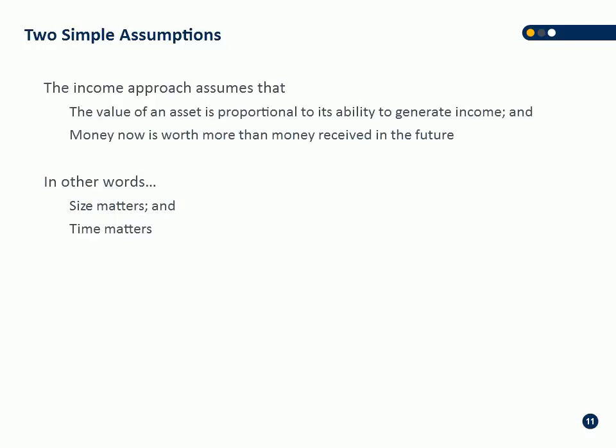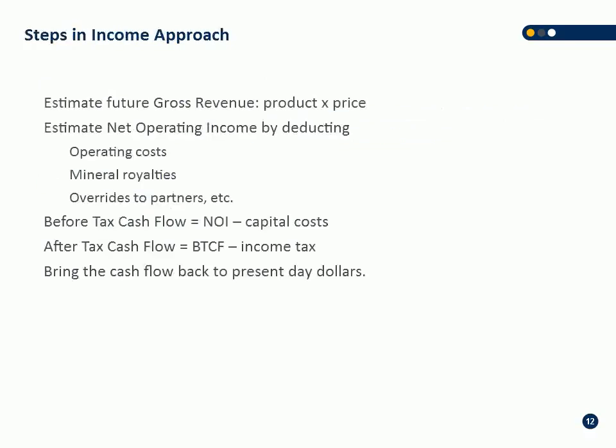The final method is the income approach, which is the one we do use for oil and gas evaluations — we forecast future cash flows and discount them to a present value. The premise is that the value of an asset is proportional to the cash flow it can generate, and money now is worth more than money tomorrow. So size matters and time matters.